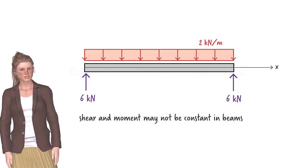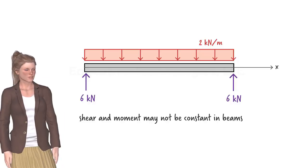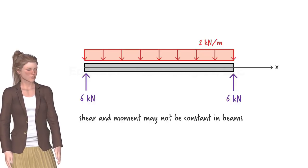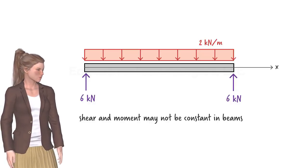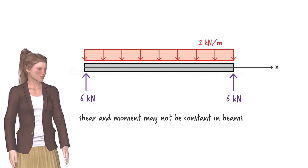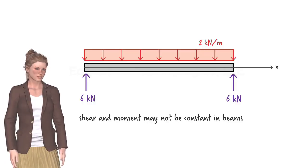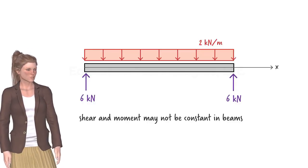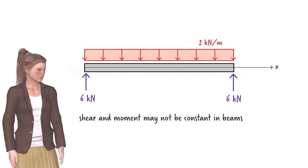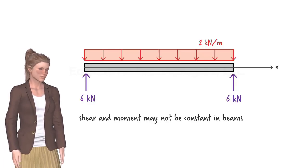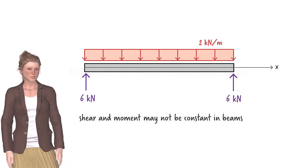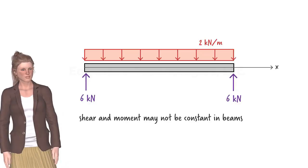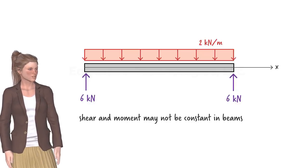In this lecture, we focus on the mathematical representation of shear and moment in beams. Once we have the necessary equations, we can then graph them in order to visualize how shear and moment change along the length of the beam and, more importantly, to locate the points at which these internal forces attain their maximum and minimum values.